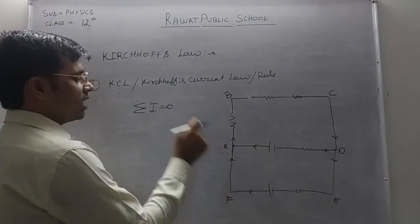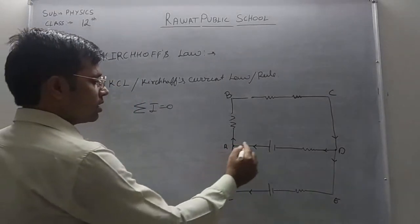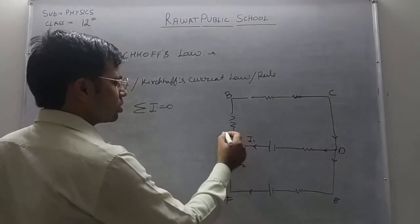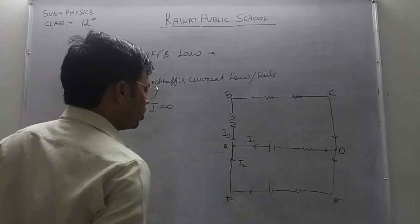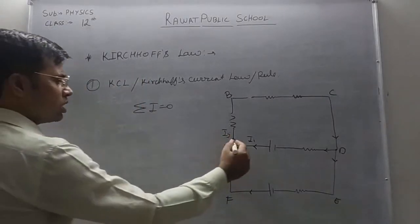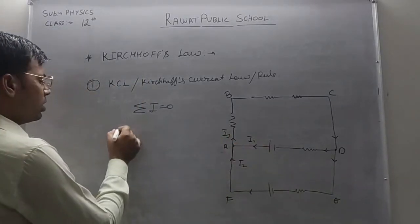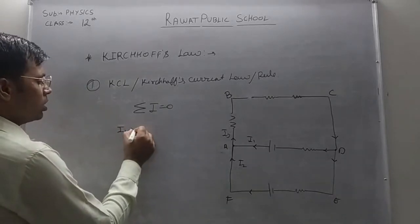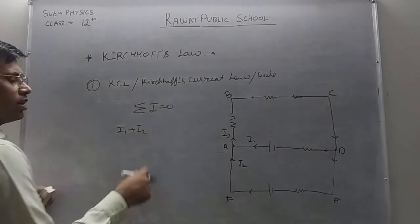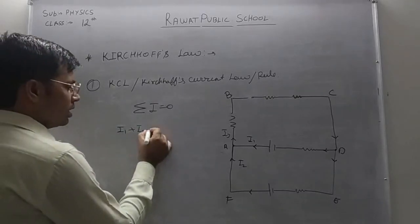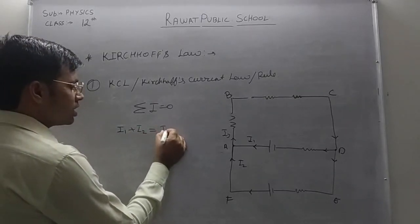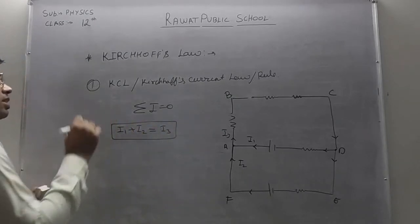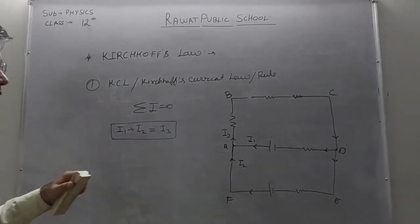Now we see you ko dhekho samashta hai ya haa per. Let at this junction A, current its name is I1, its name is I2, so this is I3. So ya haa per dhekho samashta a par current I1 is coming, I2 is coming.